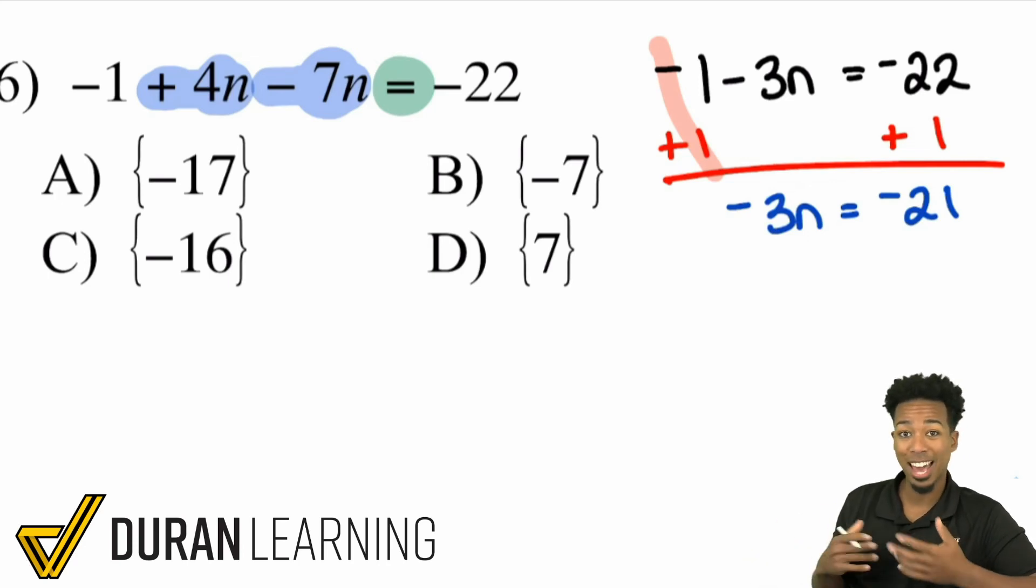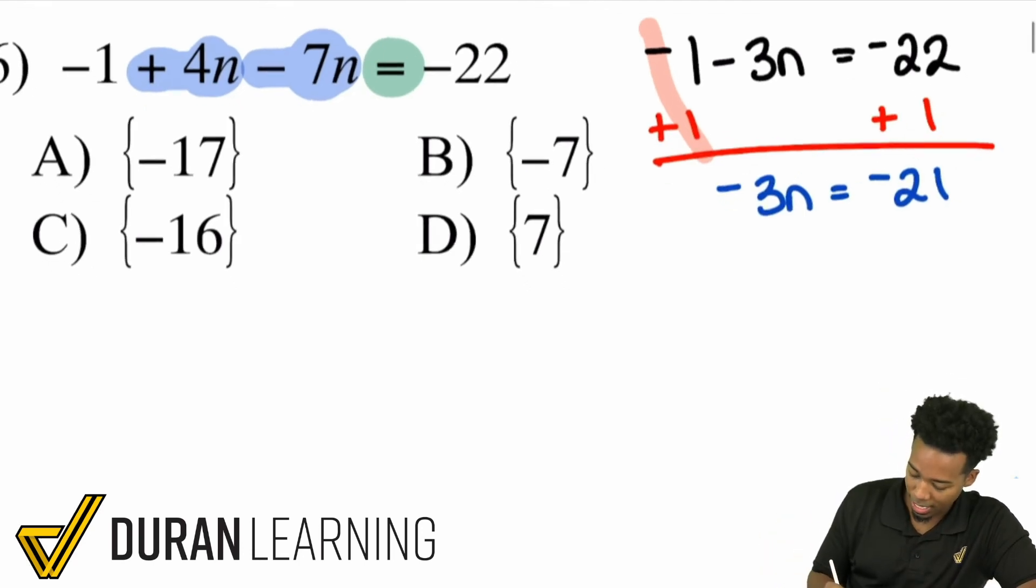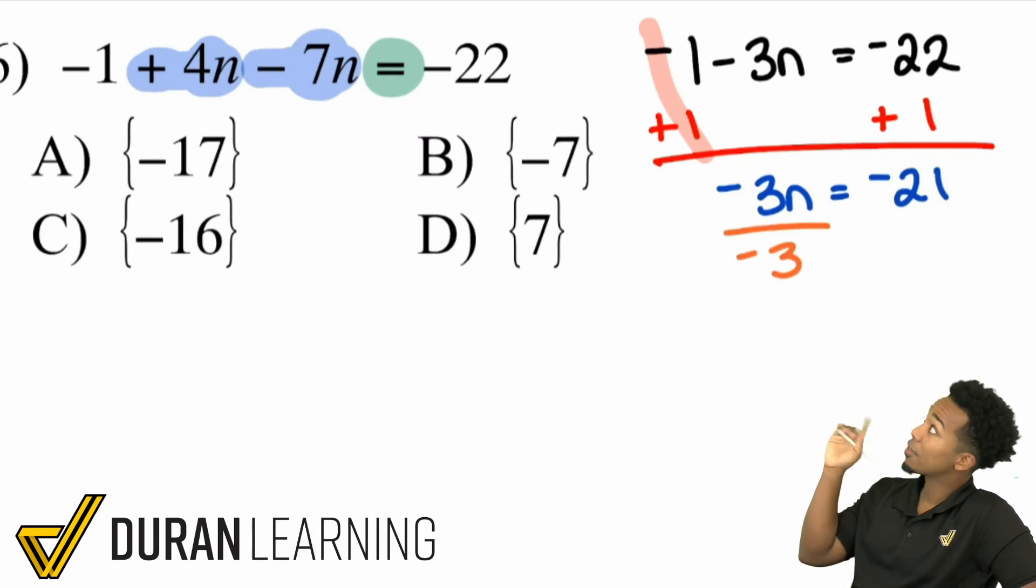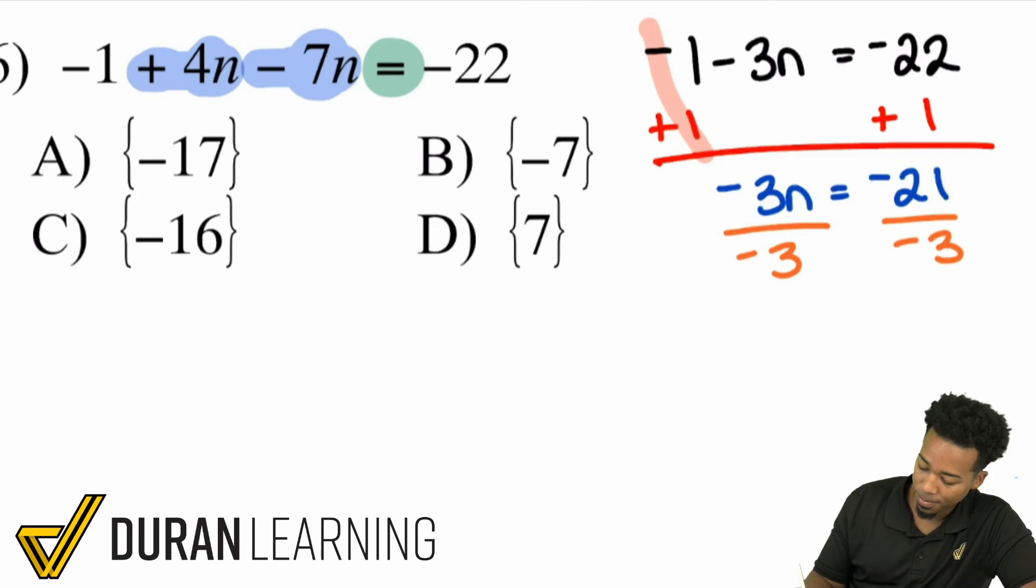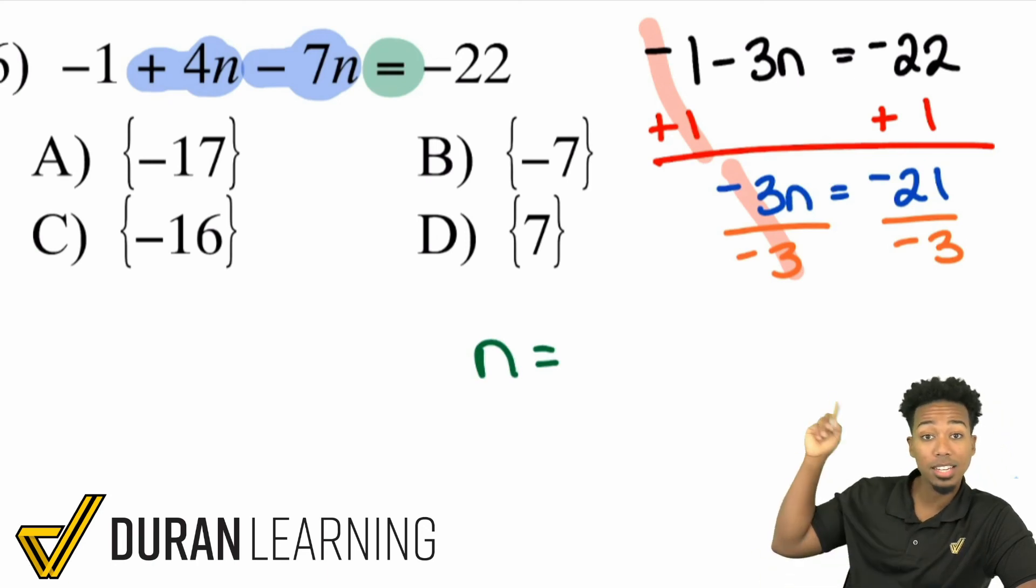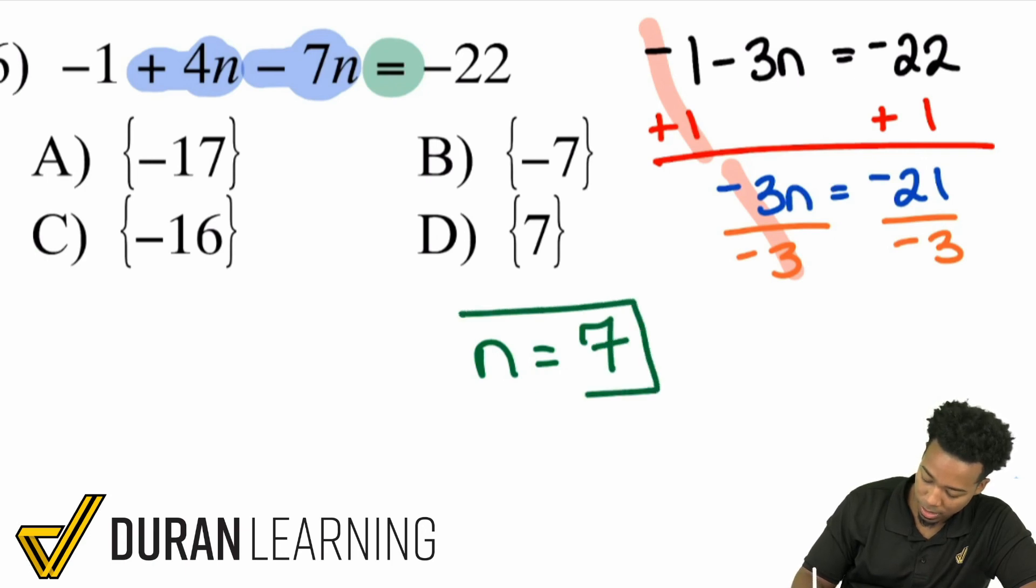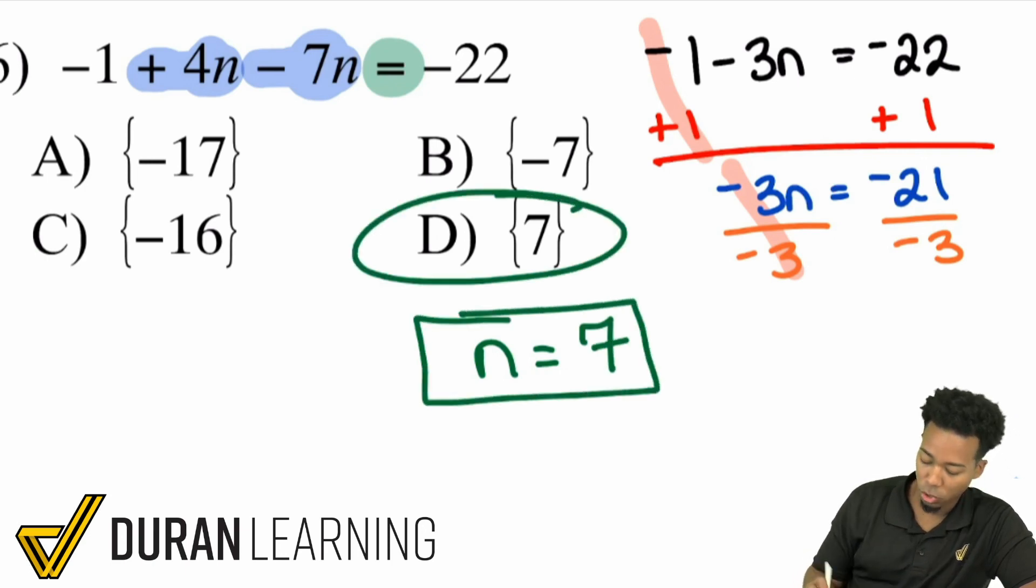Remember, if you have a negative and a positive being added together, you basically take the difference and then keep the sign of the bigger number. From here, we're going to get rid of the negative 3 by dividing it. Because remember, you have a negative 3 times n. So the opposite of multiplying by negative 3 is dividing it out. And so with that said, cancels out right there, my party people. And our final answer will be n equals, we have a negative divided by a negative. So that's a positive 21 divided by 3 is 7. And that's choice D.